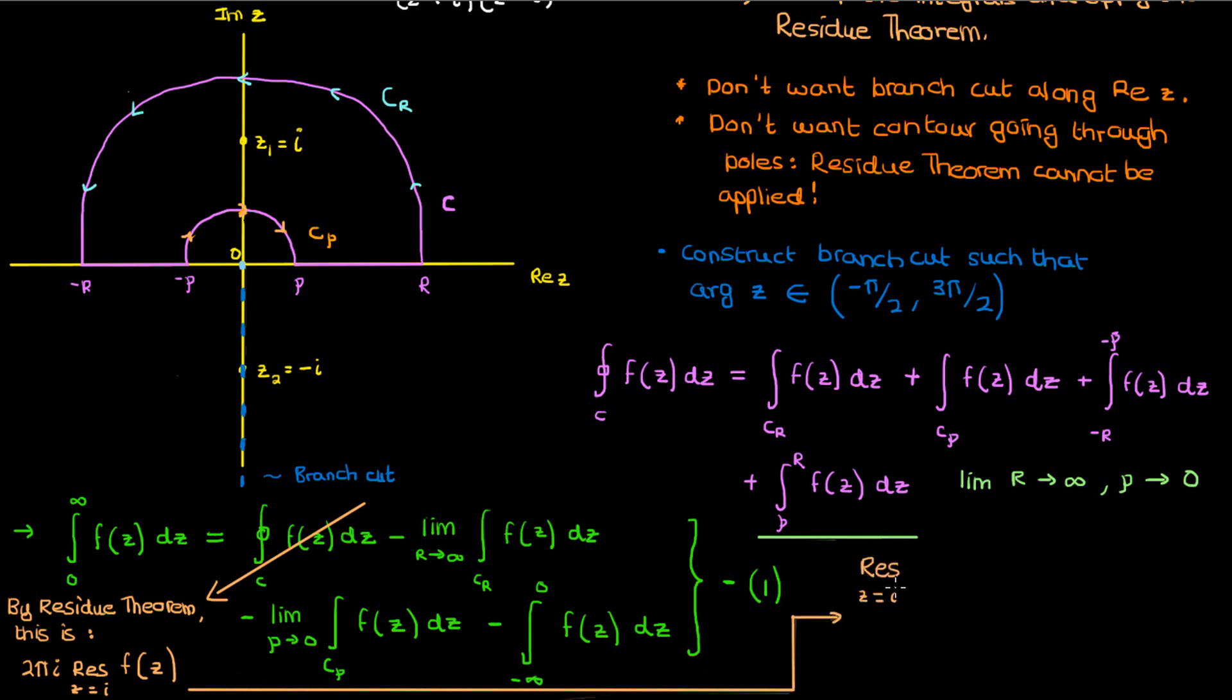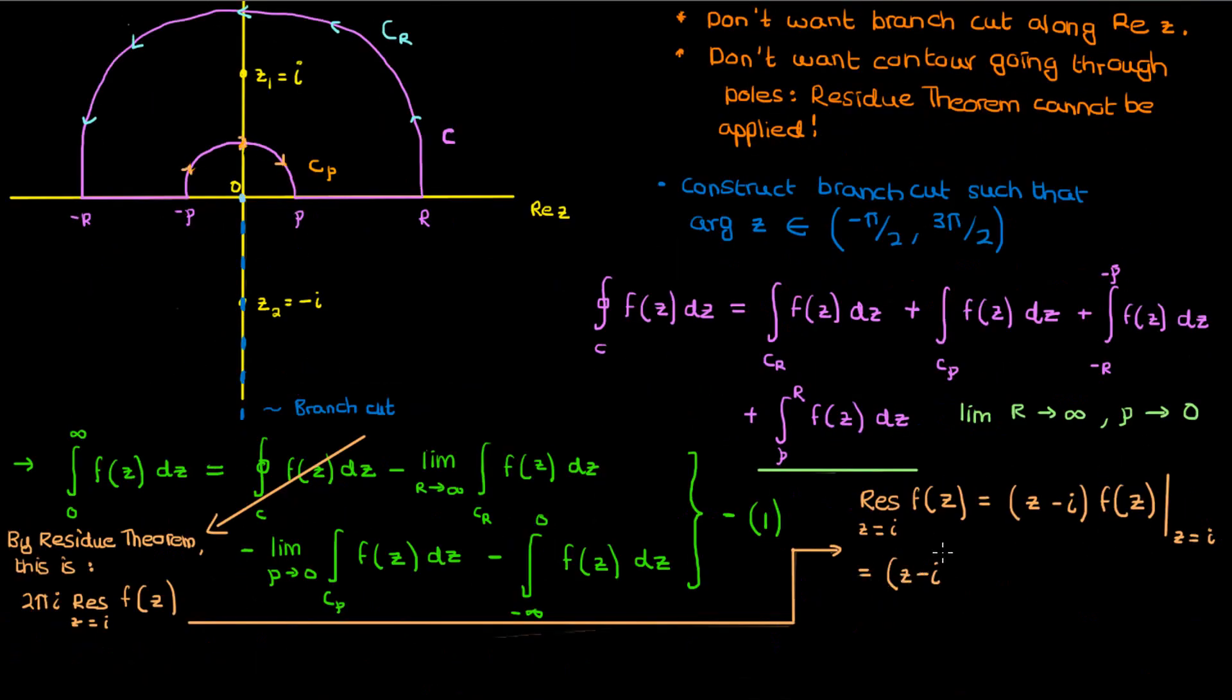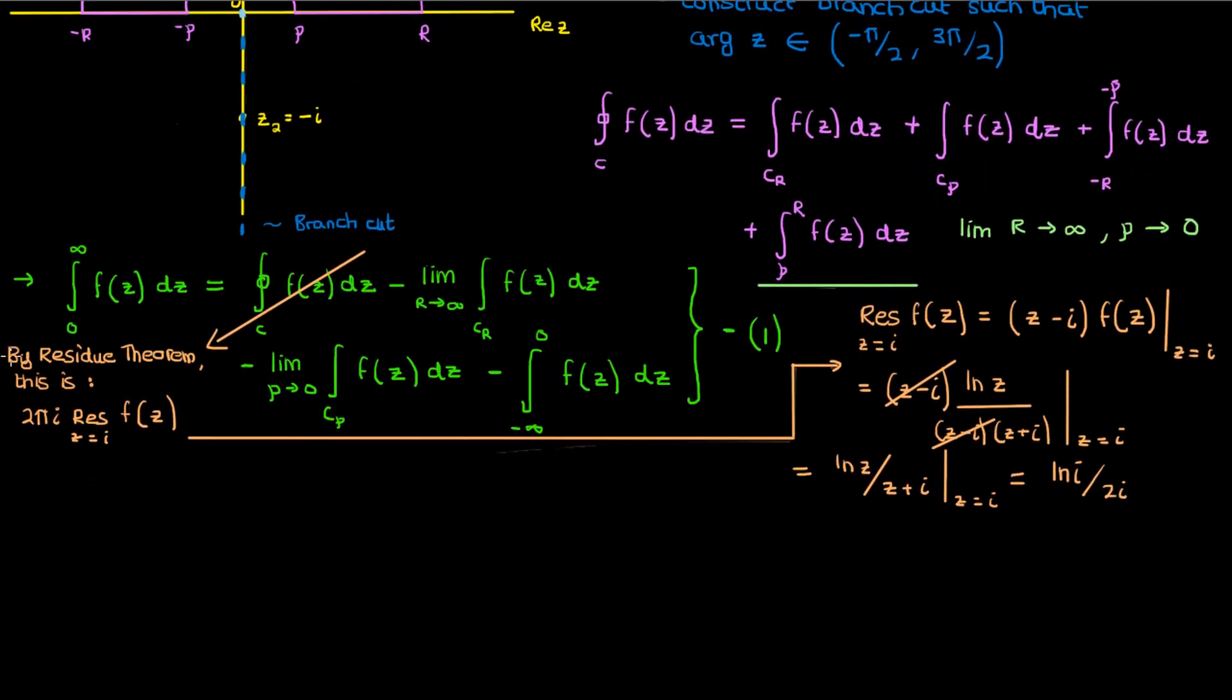Let me do that on the side here. z equals i is a simple pole since z minus i only occurs once in the denominator of f of z, so all we have to do is multiply f of z by z minus i and substitute z equals i into the remaining expression. When we multiply f by z minus i, we're only left with z plus i in the denominator. And when we substitute z equals i we'll get ln of i over 2i. But we don't know what ln i is, or do we?